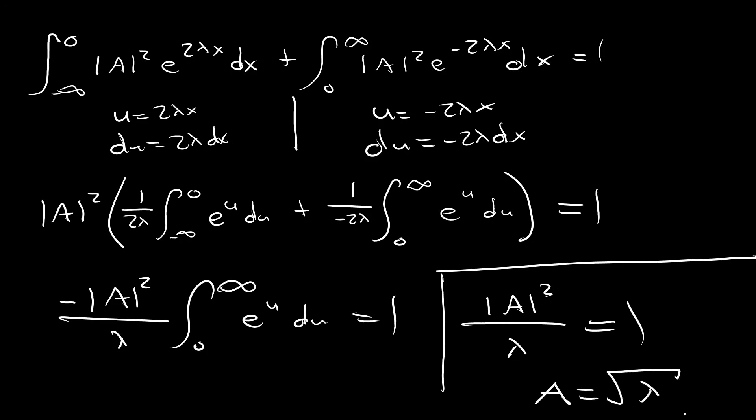And now, we know our constant out in front, and so we can plug that in and just have a normalized wave function. So, when we do that, square root of lambda e to the minus lambda absolute value of x, e to the minus i omega t. And this is our normalized wave function.